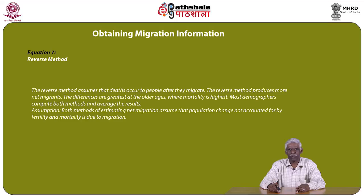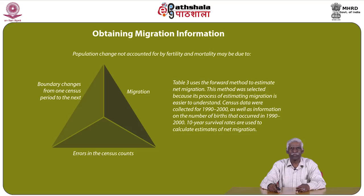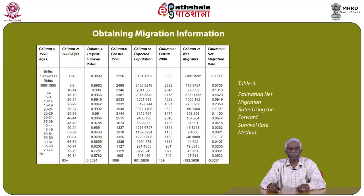Both methods assume that population change not accounted for by fertility and mortality is due to migration. It is also important to note errors in census counts and boundary changes from one census period to the next. Table 8.3 uses the forward method to estimate net migration because its process is easier to understand. Census data from 1990 to 2000, births from 1990 to 2000, and 10-year survival rates are used to calculate net migration estimates. The table clearly shows, across different age groups, how these components are combined to obtain the results.